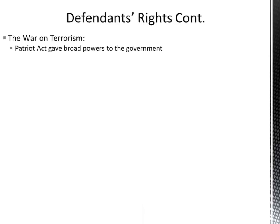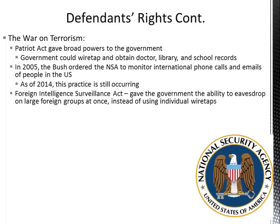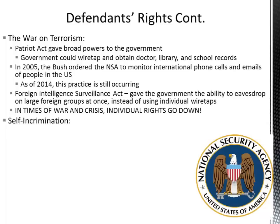Let's jump to the war on terrorism. Since 2001, the Patriot Act has given broad powers to the government — it allowed wiretapping and obtaining doctor, library, and school records without warrants. In 2005, the Bush administration ordered the NSA to monitor international phone calls and emails to people in the United States, and as of 2014 this practice was still occurring. The Foreign Intelligence Surveillance Act gave the government the ability to eavesdrop on large foreign groups all at once instead of using individual wiretaps. Again, during times of war and crisis, individual rights go down.